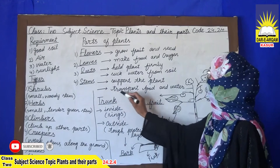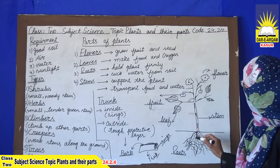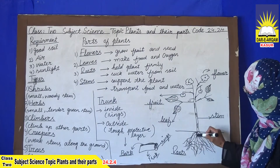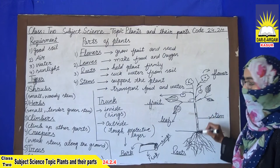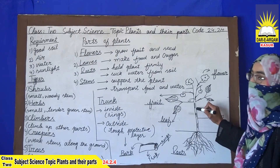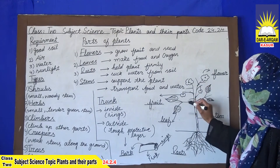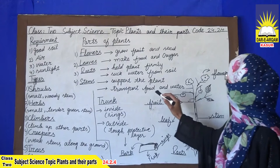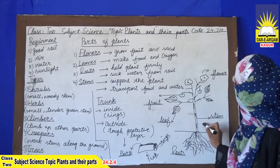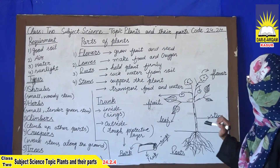Stems support the plants — all the branches, leaves, fruits, and flowers are present on the stem, so the stem supports everything. The stem's second function is to transport food and water. Water transportation occurs from the roots to the stem, and then the stem carries water and food to all parts of the plant: flowers, leaves, branches. Sunlight, air, water, and good soil are all necessary for the survival of the plant's parts.